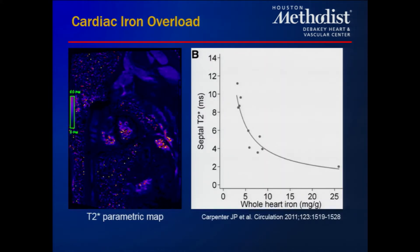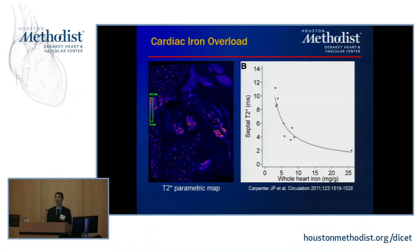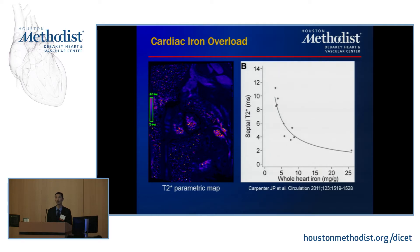Cardiac MRI is also very useful in patients suspected of having cardiac iron overload. There is well-published data demonstrating an association between T2 star values, a magnetic parameter measured in the heart, and iron content of the heart. This has become very useful for liver transplant patients, where cardiac iron overload can be unmasked post-transplant, resulting in what is termed post-transplant cardiomyopathy.